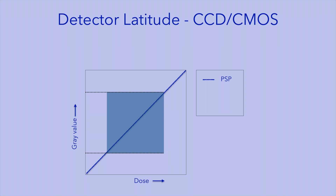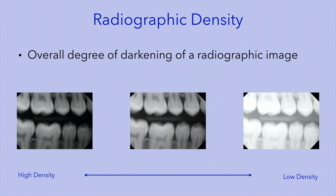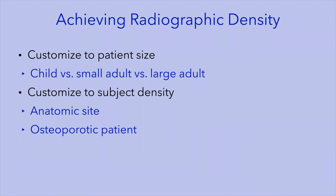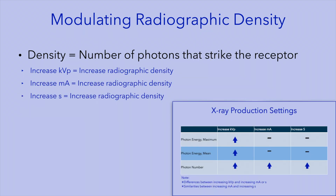The overall degree of darkening caused by radiation is referred to as radiographic density. A radiograph with high density is dark, whereas a radiograph with low density is light. We achieve appropriate radiographic density by adjusting the exposure settings, considering the patient size, the density of the anatomic site being imaged, and any pathological conditions that may decrease radiation absorption. Radiographic density is a function of the number of photons that strike the receptor; by increasing the KVP, the mA, or the seconds, we increase the radiographic density.